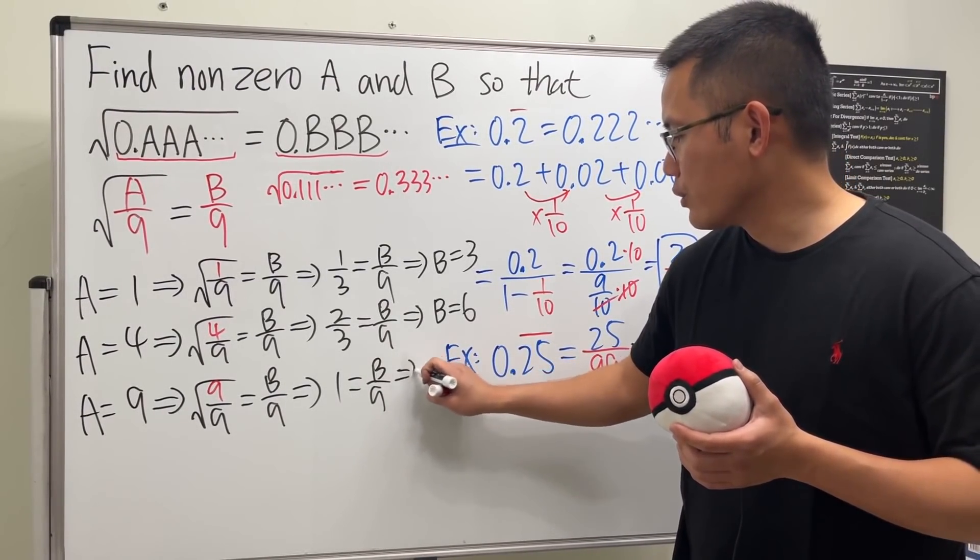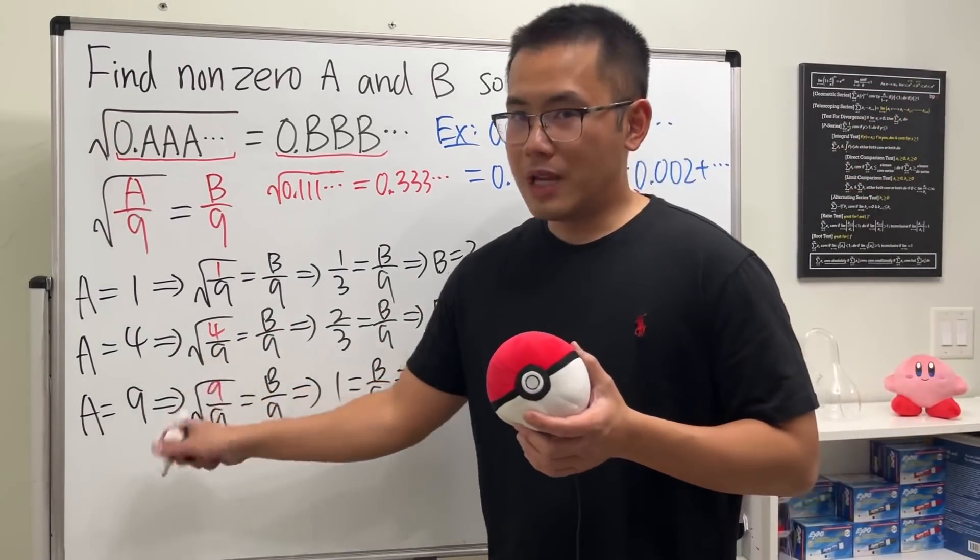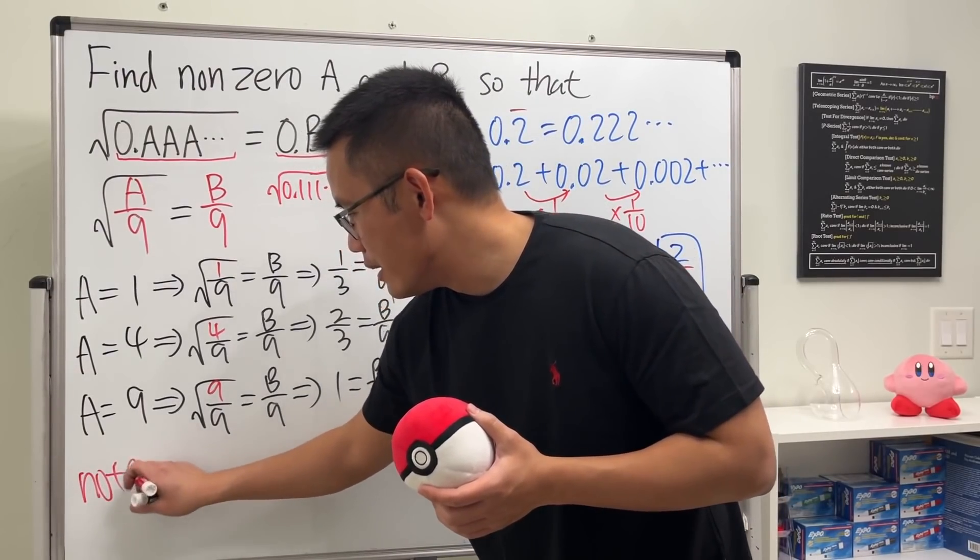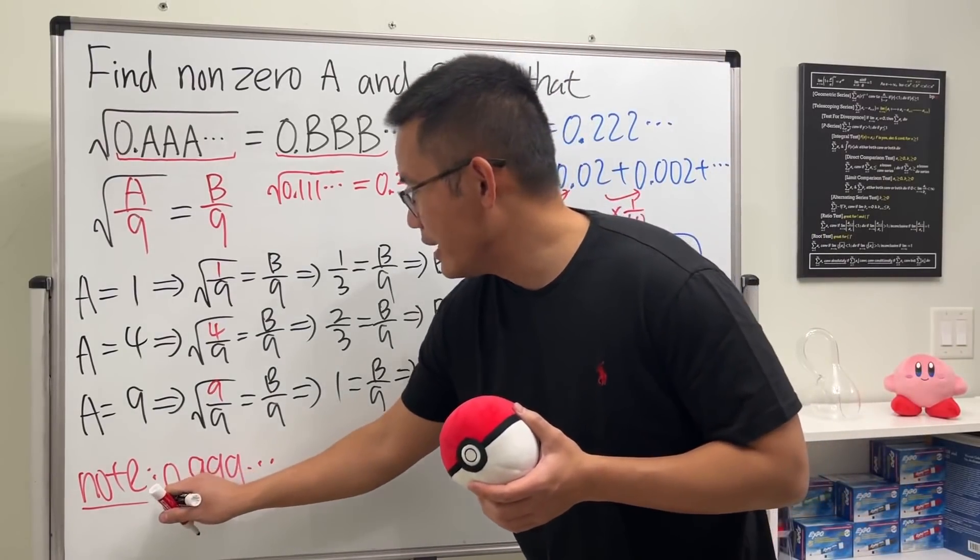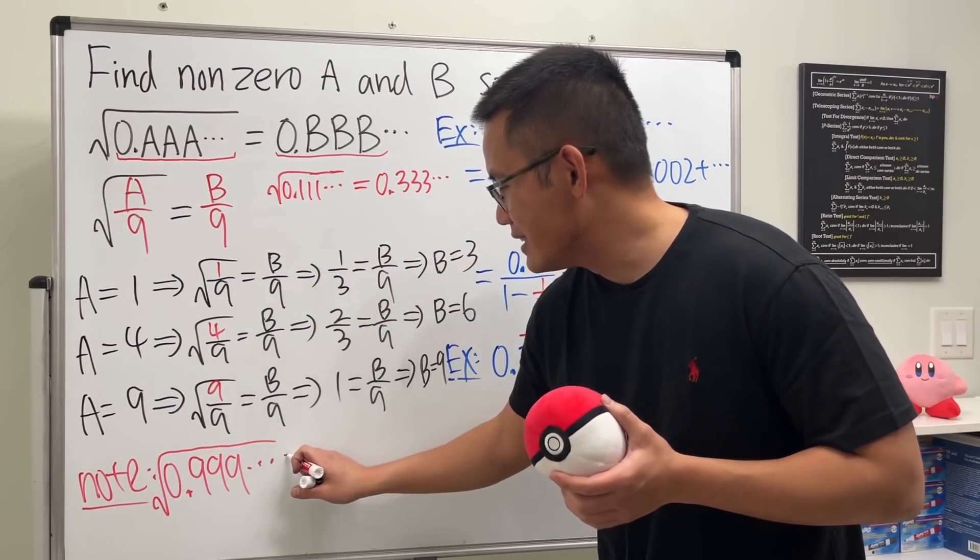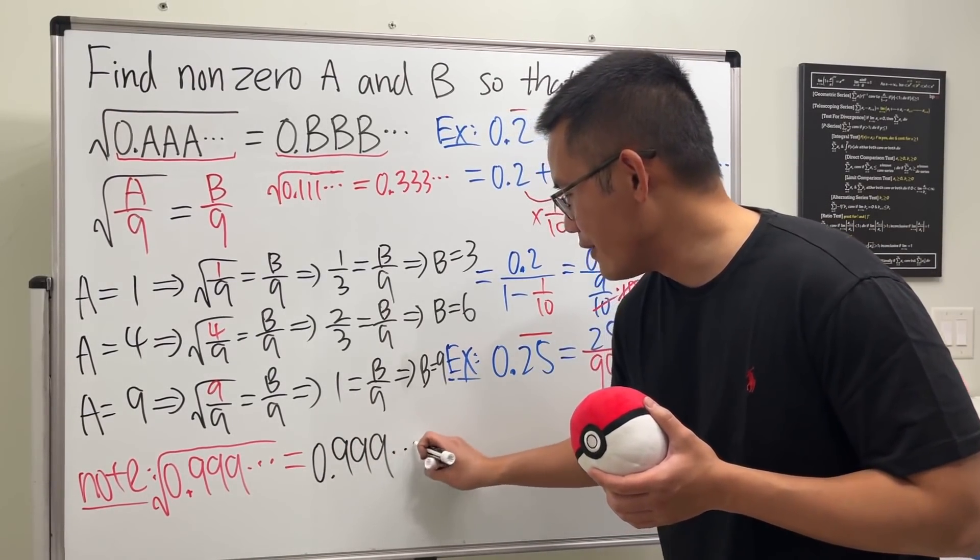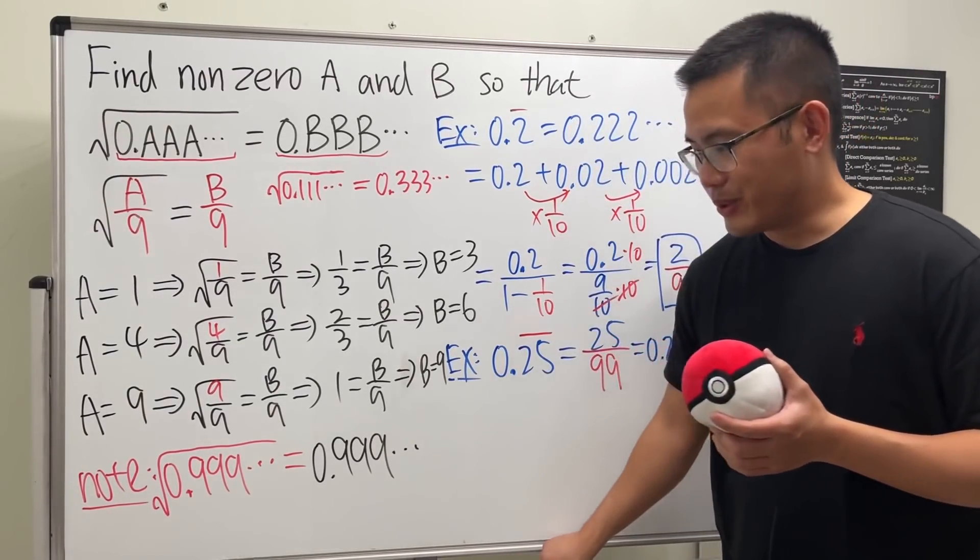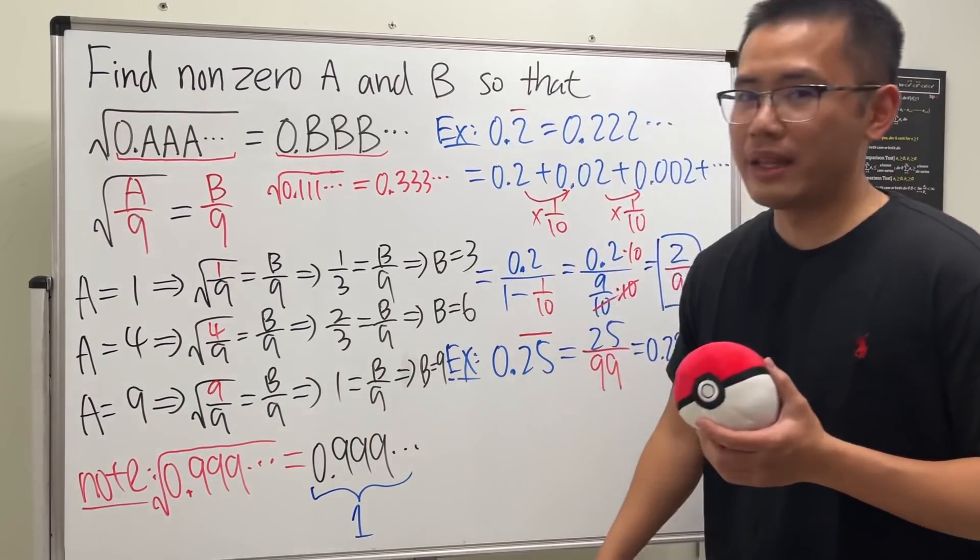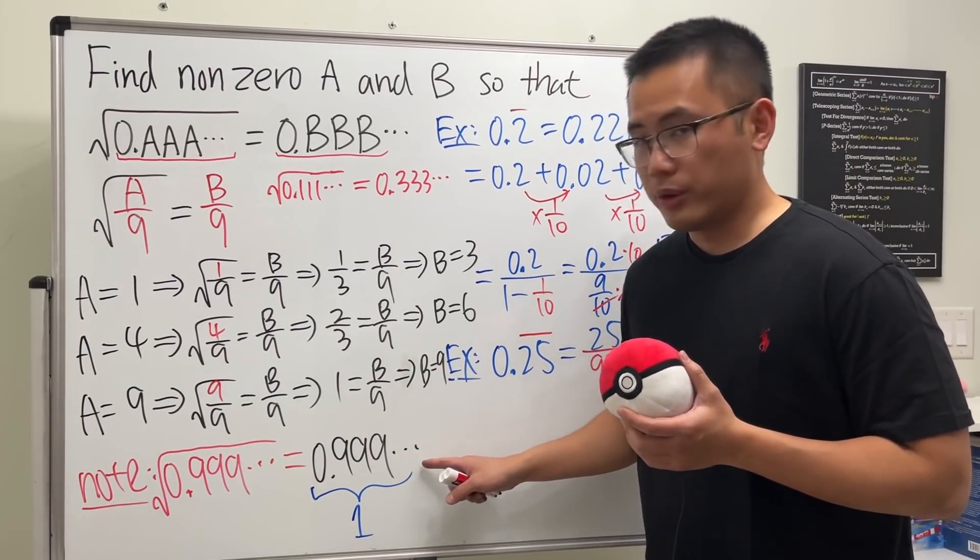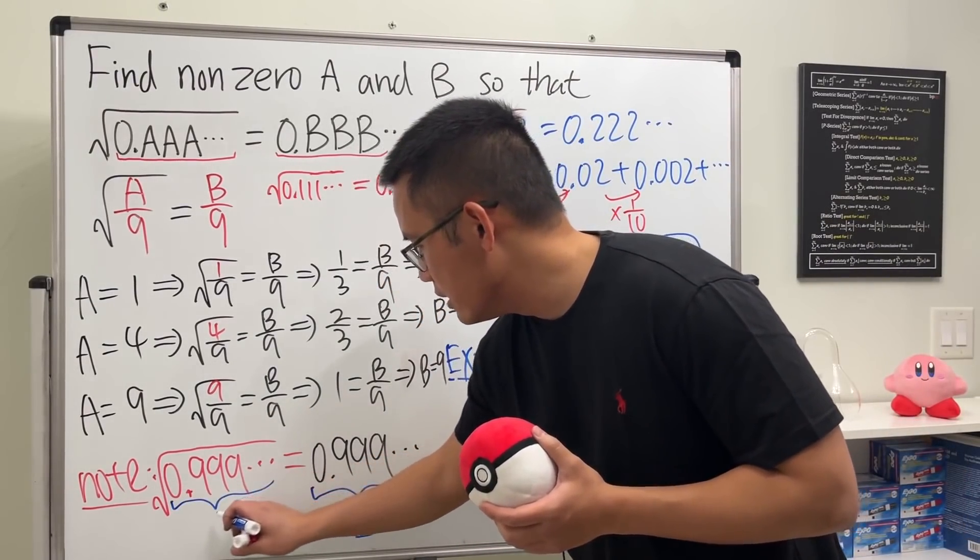What's so crazy about this? For this combination, when we have 0.999... forever and take the square root, we're saying it equals 0.999... forever. How is this possible? The truth is 0.999... forever is actually equal to 1. The dot-dot-dot notation represents the limit, so the limit equals 1. When we have the square root of 1, it equals 1.